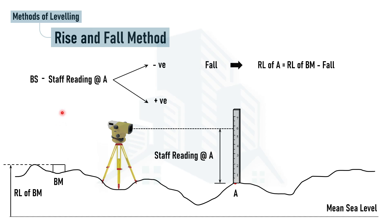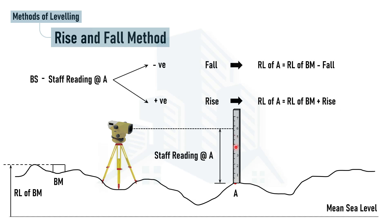It's also possible to get a positive difference. That happens when point A is higher than the benchmark — in that case the back sight reading is higher than the staff reading at point A, giving a positive value, which we call a rise. The formula simply changes sign: the reduced level increases by the rise value.